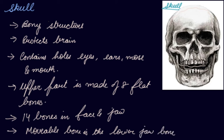This is the upper part and this is the lower part. These are some of the holes that are there for your nose, ears and eyes. This is your jaw — upper jaw and lower jaw. Your teeth are fixed in this jaw.